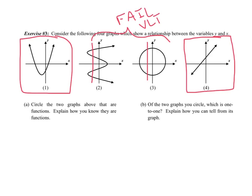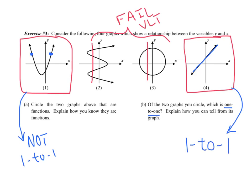For part B — of the two graphs we circled, which one is one-to-one? On graph number one, I can pick two random points that have unique x values but share the same y value. So this graph is not one-to-one because a certain y value gets repeated. But on the other graph, not only is every x value unique, but every y value is unique as well. So this is not only a function, but it's also a special one-to-one function.